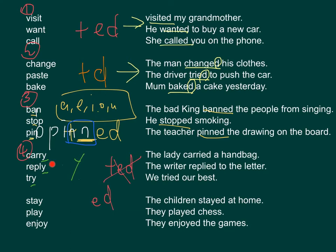Like, we have 'carry' here. So the last character is Y. So what we need to do first is 首先我們要將Y轉成I啦，那整個英文字就會變成CARRI啦，那要將它變成過去式，我們就會直接變成 'carried' 啦。'The lady carried a handbag' — 那個女士就戴了一個手袋啦。'The writer replied to the letter' — 個作者就覆過封信啦。'And we tried our best.' Tried. OK?